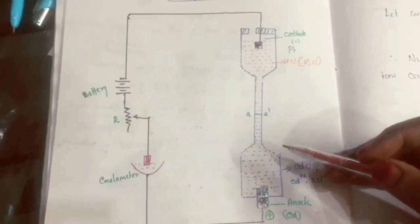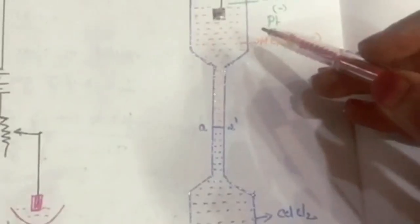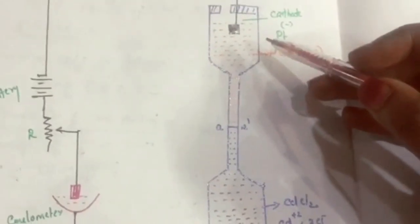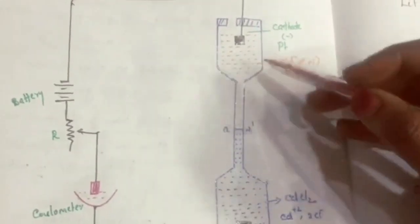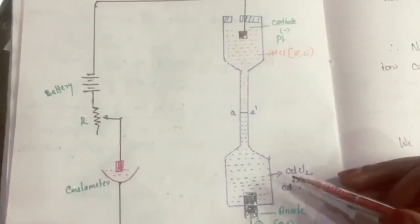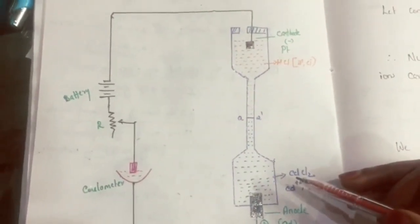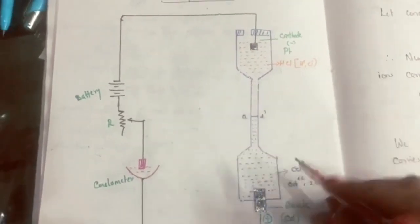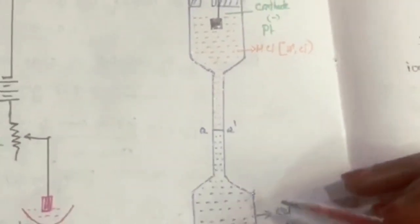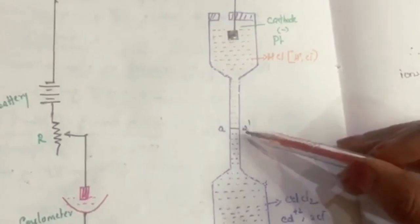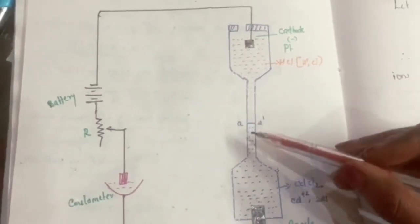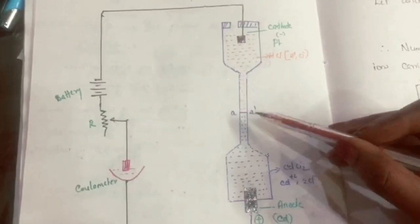Two electrolytes are present. The upper part of the tube is filled with the principal electrolyte whose transport number has to be determined — here we are using HCl as the principal electrolyte and CdCl₂ as the indicator electrolyte. The lower part of the tube is filled with indicator electrolyte. This indicator electrolyte enables the formation of boundary AA'.